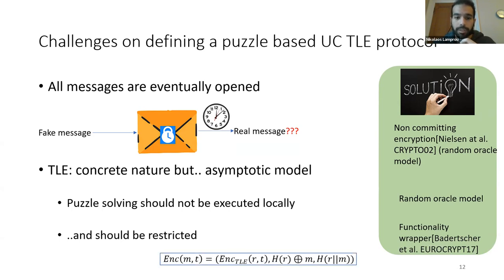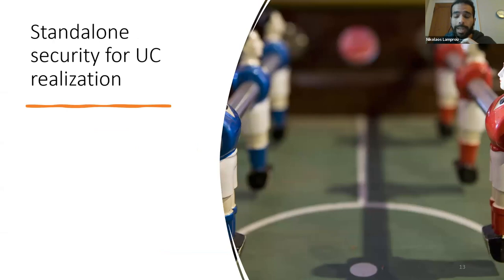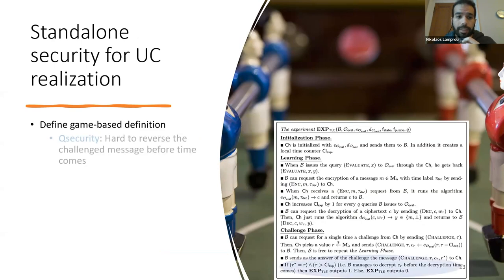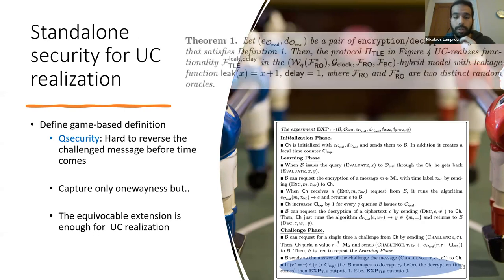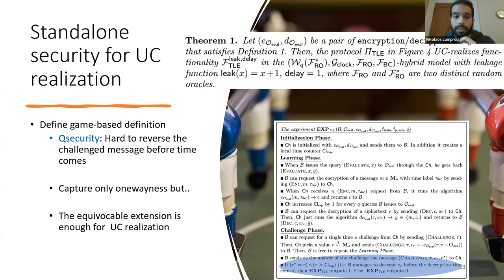This is the extended construction of a time-lock encryption; the second argument is exactly where the simulator can equivocate to the correct message because there is a call to the random oracle. We linked a TLE construction with our UC definition by introducing a game-based notion called Q-security, which informally states that it is hard to reverse a challenge message before the time comes. We only capture one-wayness and not semantic security, but with the equivocable extension this is enough for a UC realization. We have the theorem that a TLE construction satisfying Q-security can UC-realize our ideal functionality F_TLE.